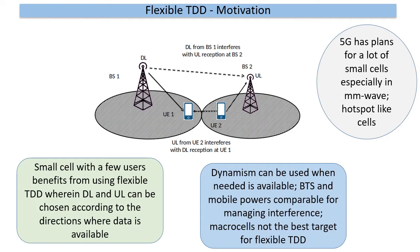TDD has become mainstream from 4G onwards, and there is a good reason why it attracts a lot of attention — primarily it gives a lot of flexibility in adjusting between downlink and uplink. One of the challenges with TDD is that neighboring base stations have to follow the same downlink-uplink configuration, as otherwise you would have a downlink being interfered with by an uplink or an uplink being interfered by a downlink transmission, and especially this is probably going to be the most harmful case.